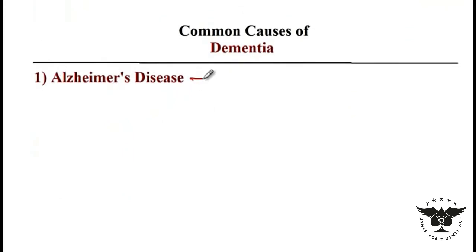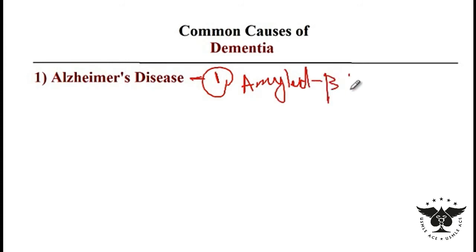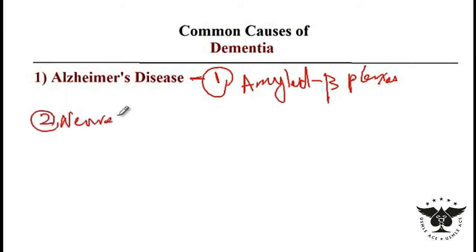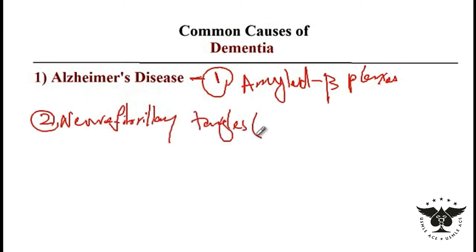The most common cause of dementia is Alzheimer's disease. This is caused by either the intracellular accumulation of amyloid beta plaques, or by the accumulation of extracellular neurofibrillary tangles that are made of the microtubule-binding protein called tau.